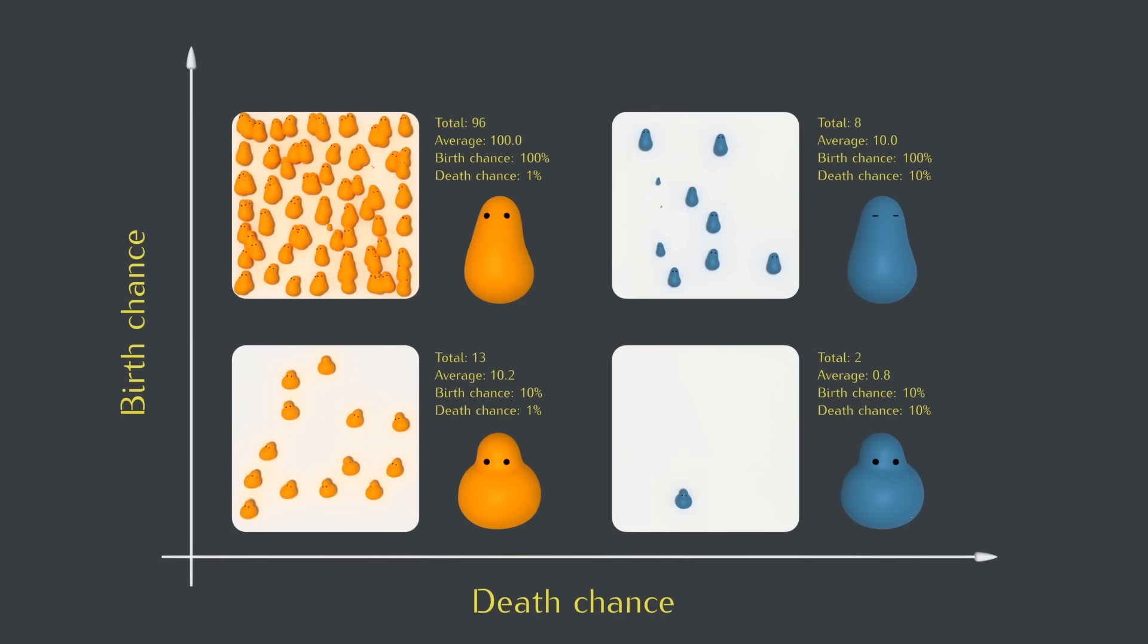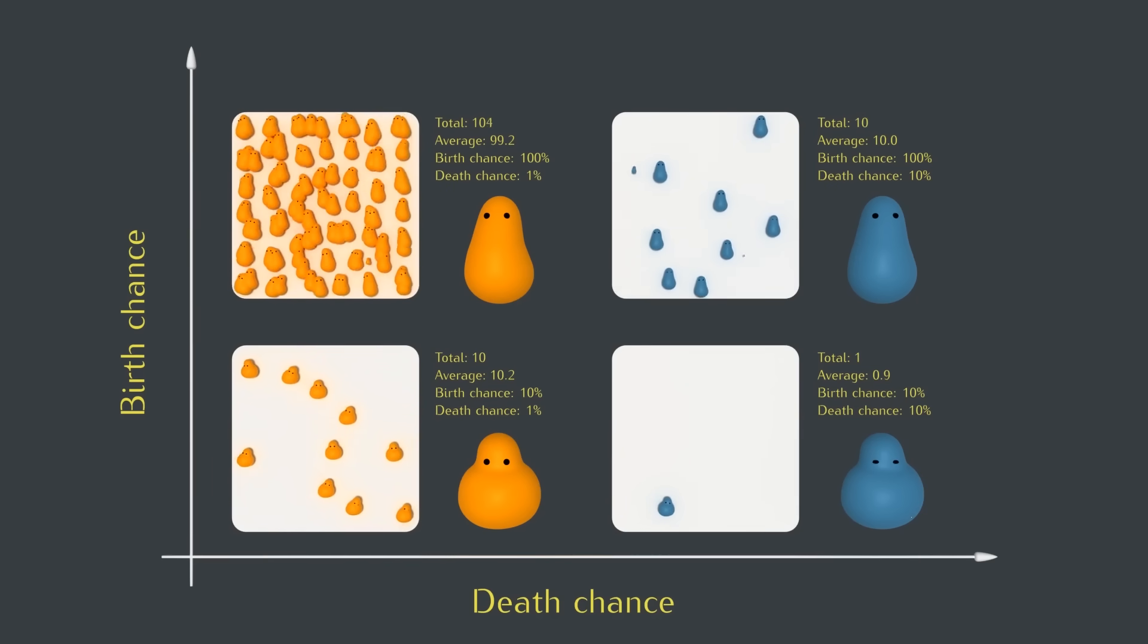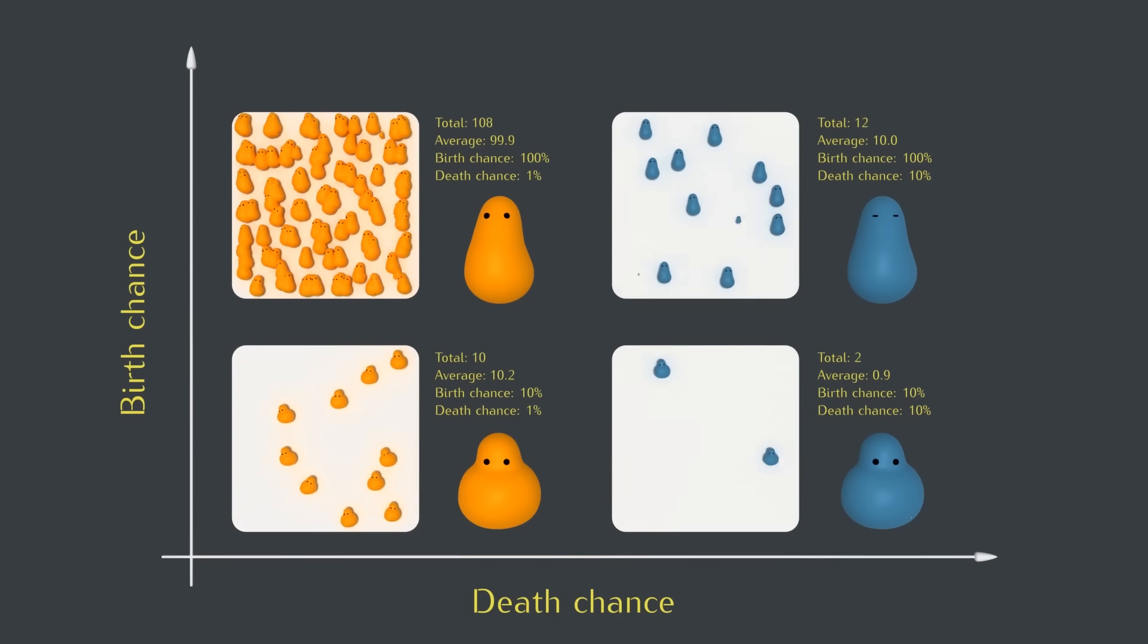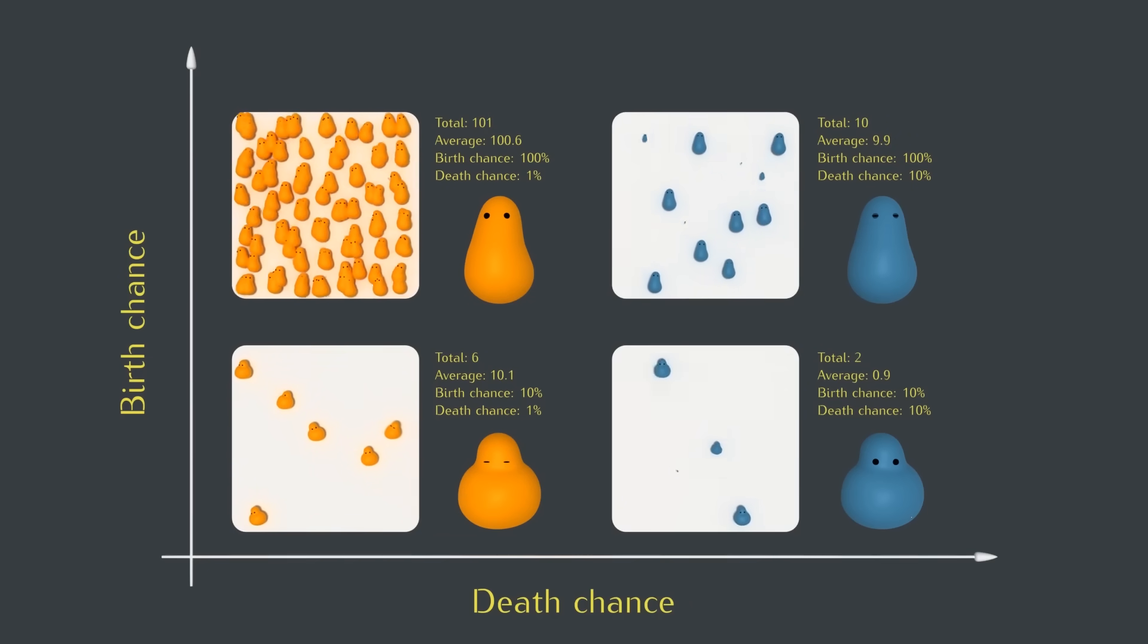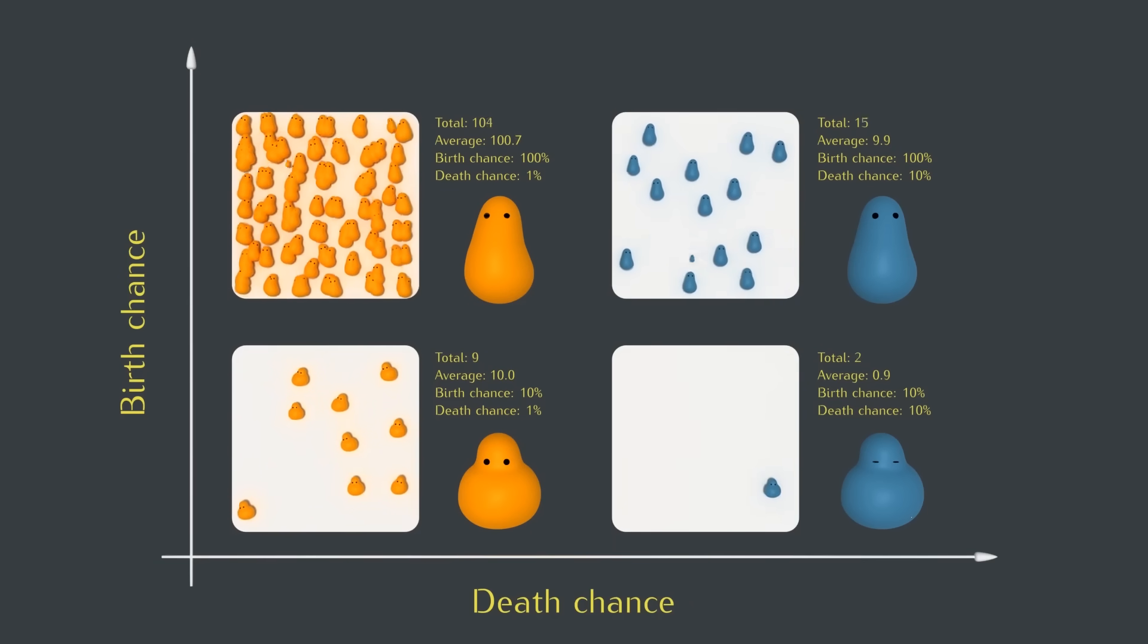So, why do these simulations seem to stabilize around a certain number of creatures? You might already have some intuition for this, but we can translate that intuition into an equation which will let us predict the equilibrium number for any birth rate and any death rate. If the total birth rate is equal to the total death rate, we'll expect the population size to stay the same from one frame to the next. And since each creature individually has a chance of dying, the total death rate depends on the current number of live creatures.